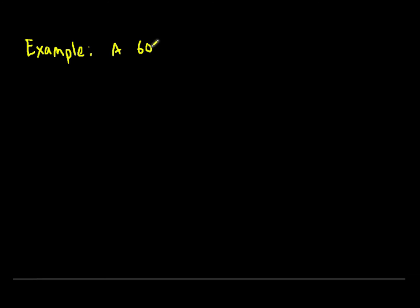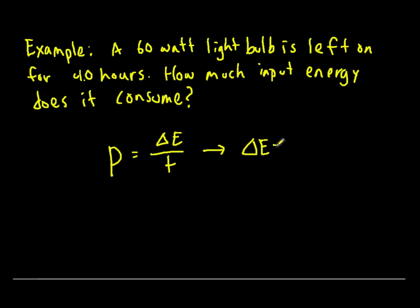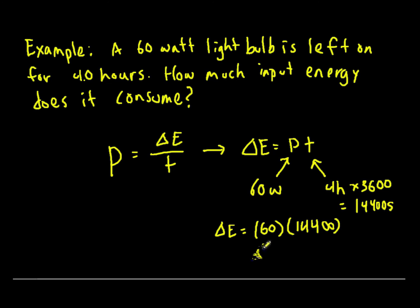Example. A 60 watt light bulb is left on for four hours. How much input energy does it use? Power is change in energy over time. This means we can rearrange the formula to find energy by multiplying power and time. Our power is 60 watts and our time is four hours times 3600 gives us 14400 seconds. So the change in energy is 60 times 14400 which gives us a change in energy of 8.6 times 10 to the 5 joules.